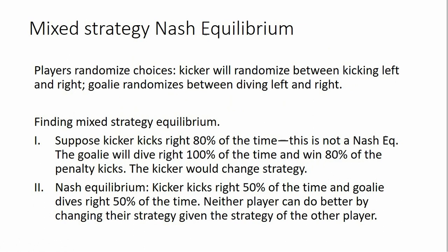Basically, it's like flipping a coin before you kick the soccer ball. If it turns up heads, kick right; if it turns up tails, kick left. The goalie would do the same thing. That would technically be the mixed strategy Nash equilibrium in this game.